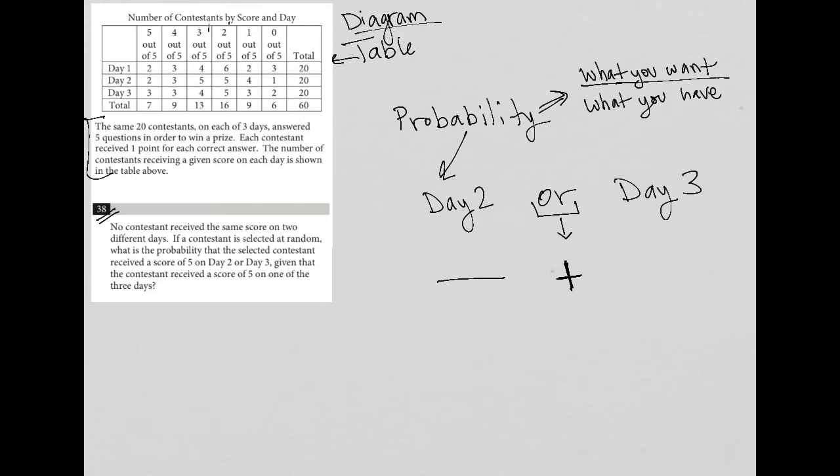So, what is the probability that a contestant scores 5 points on day 2? Well, for day 2 and scoring 5, that puts us right here on the table, the number 2. So, we know that what we want is to score 5 points. So, that's only 2 contestants were able to do that. Now, what do we have? How many total contestants scored 5 out of 5? Well, that's down here. It's the 7. So, 2 out of the 7 contestants that scored 5 out of 5 earned that score on day 2.